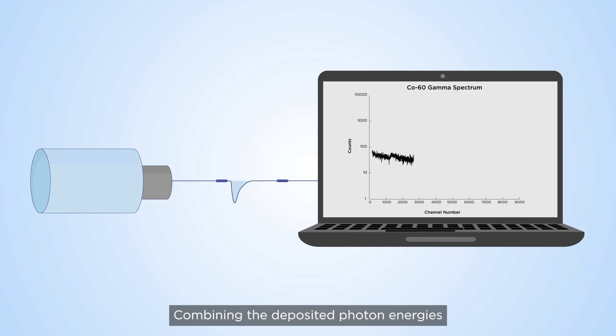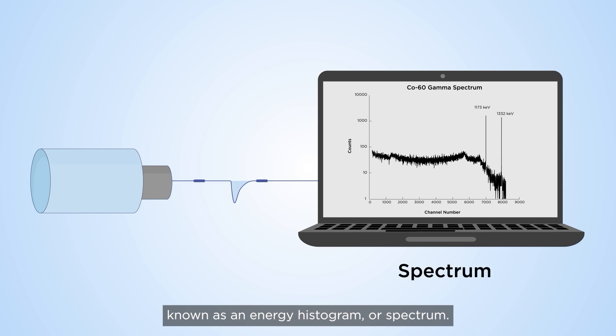Combining the deposited photon energies provides a broad picture of the sample's radioactive output, known as an energy histogram or spectrum.